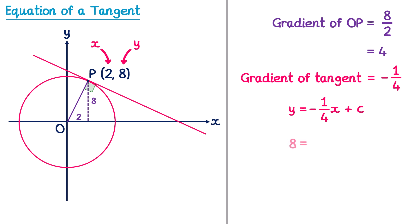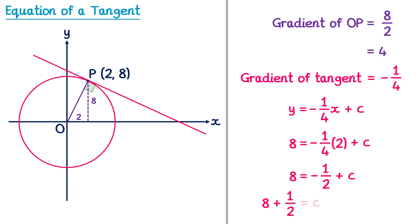Since it starts with Y equals, we'll have 8 equals negative one quarter lots of 2, and then plus C. We now need to solve this to find the value of C. To deal with negative one quarter multiplied by 2, we just multiply the numerator 1 by 2, and we get negative 2 over 4, plus C. Negative 2 quarters simplifies to negative one half, and then we can add one half to both sides, so we get 8 plus one half equals C, or 8 and a half equals C.